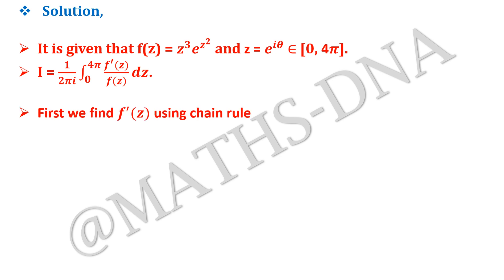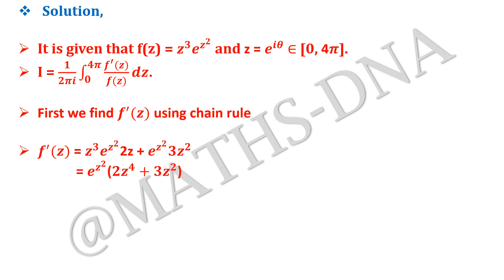First we find f'(z) using the chain rule: f'(z) = z³·e^(z²)·(2z) + e^(z²)·3z². This gives us f'(z) = e^(z²)·(2z⁴ + 3z²).